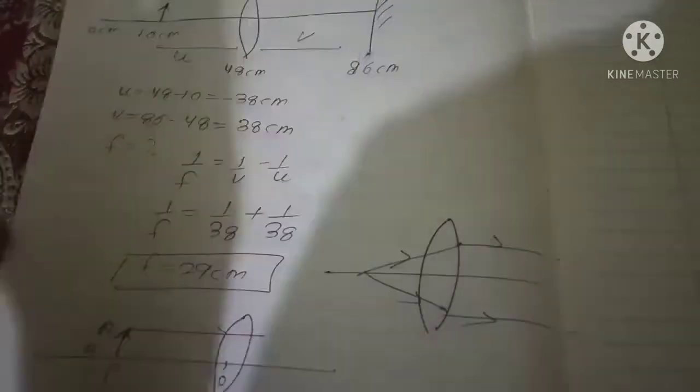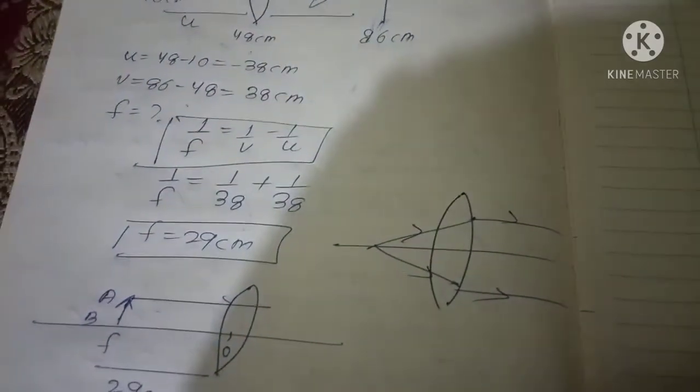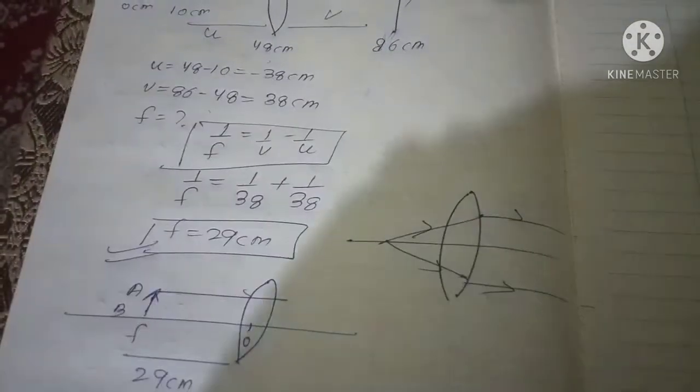Now we will use the lens formula: 1 over F is equal to 1 over V minus 1 over U. On putting the values we can see we are getting F is equal to 29 centimeter.